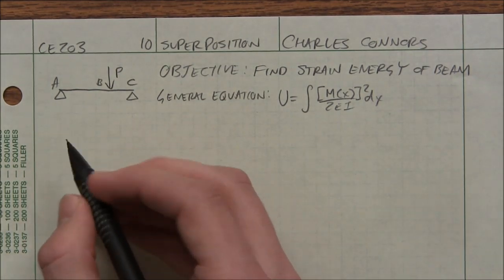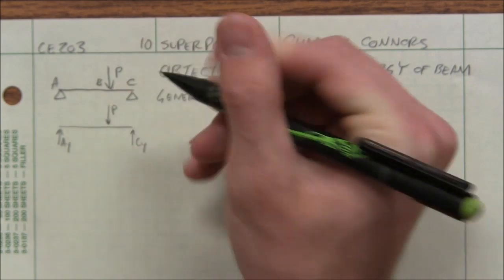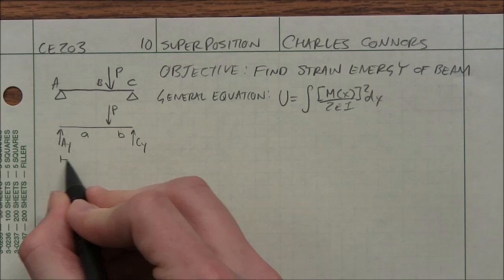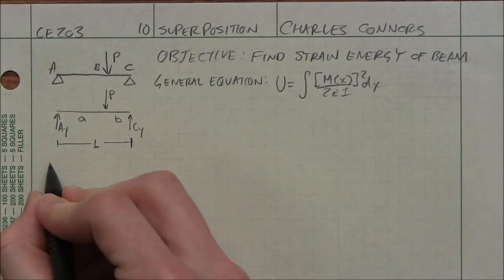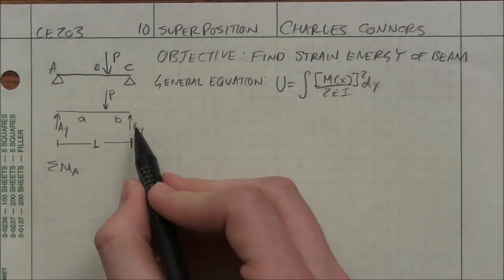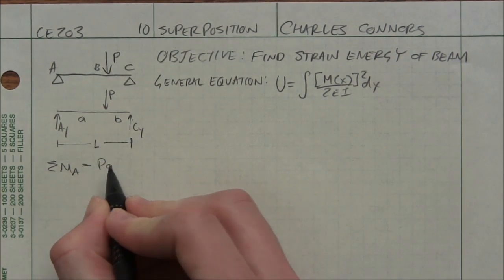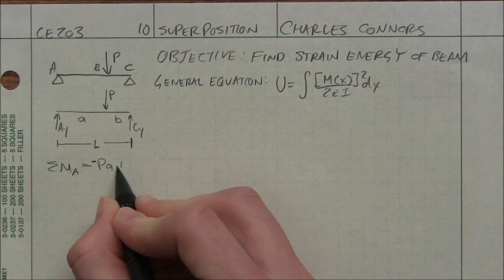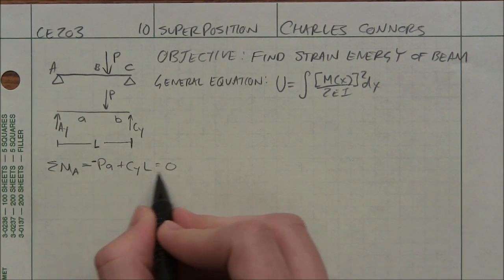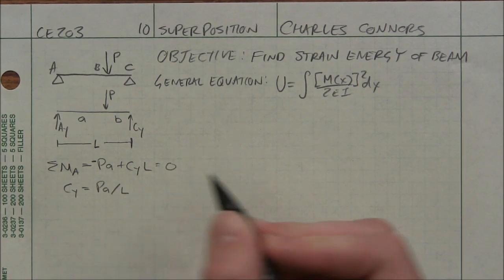So if I look at my beam, I'll redraw this. Remember this is A. That's distance B. The whole distance. All right, so I'm going to do some of the moments on side A. So I can calculate CY. So that's P times A. That's a negative moment. C times L. That's a positive moment. A equals 0. So CY equals PA divided by L.